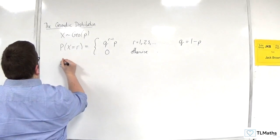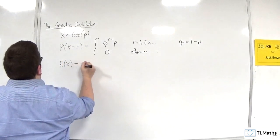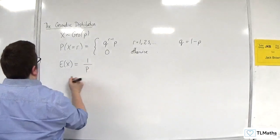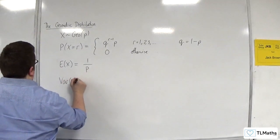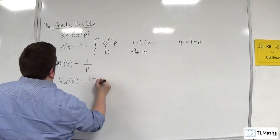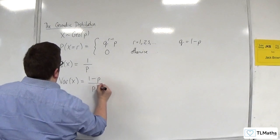Now E of X for the geometric distribution is 1 over P. And VAR of X is equal to 1 minus P over P squared.